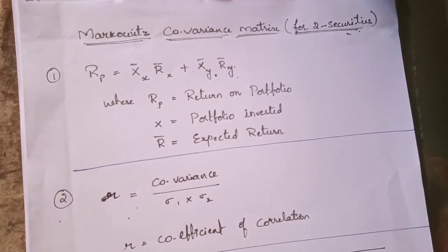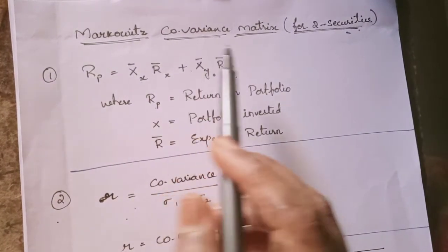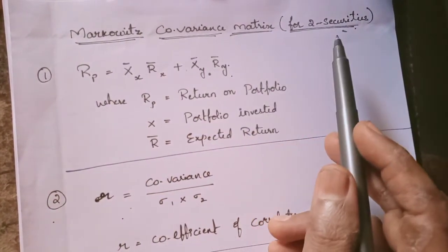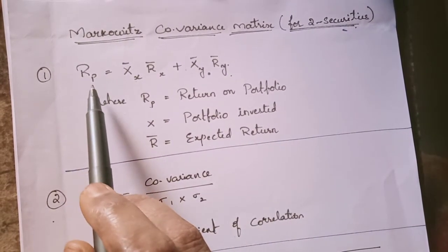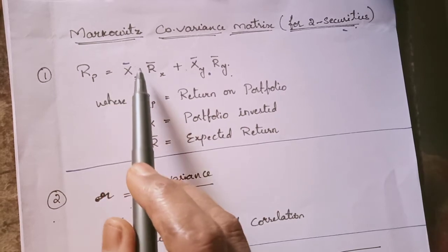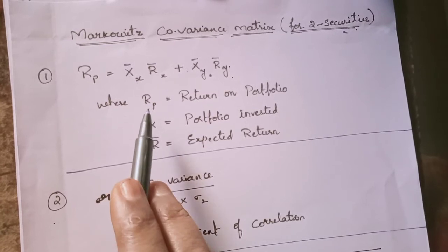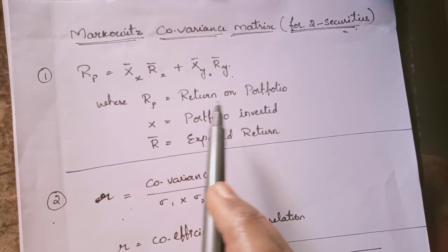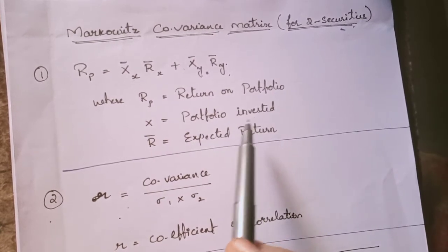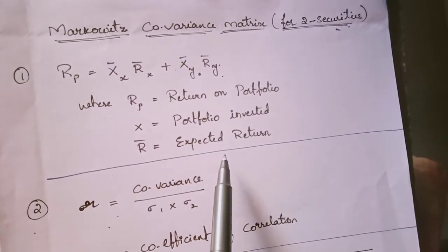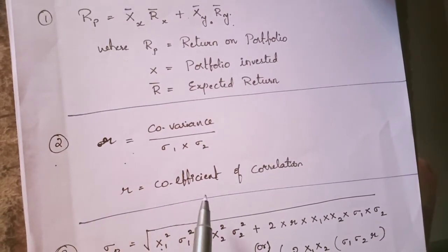Here I am explaining the formulas in Markowitz covariance matrix — it is for two securities. The first formula is portfolio return, denoted by rp, which equals x-bar-x into r-bar-x plus x-bar-y into r-bar-y. Here x represents the invested amount in the portfolio and r-bar represents the expected return.